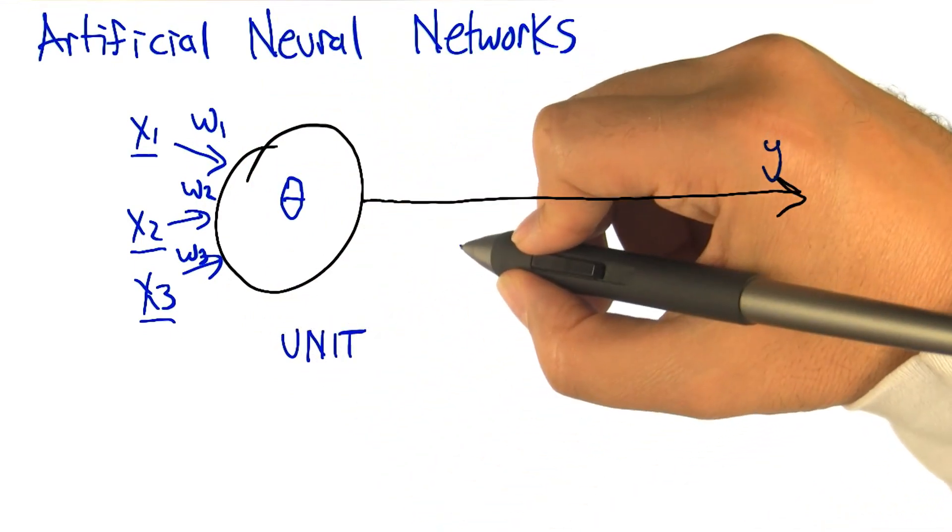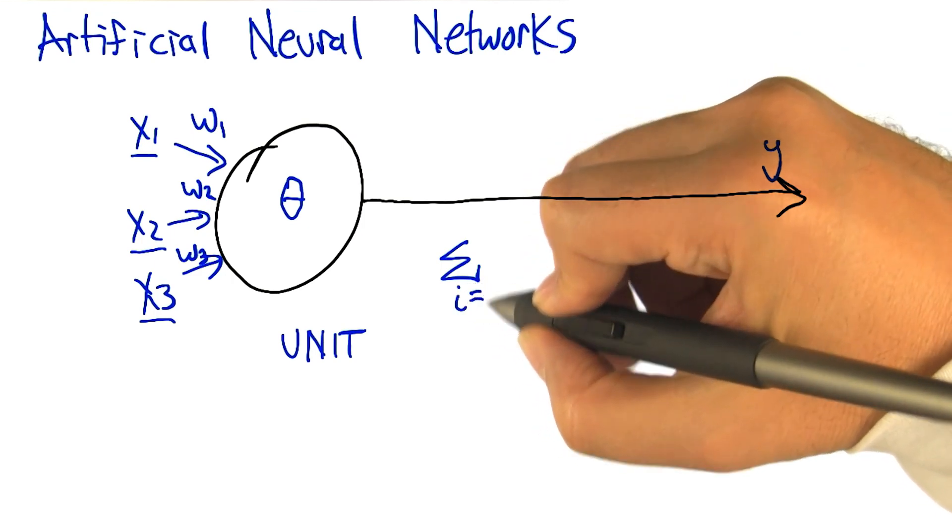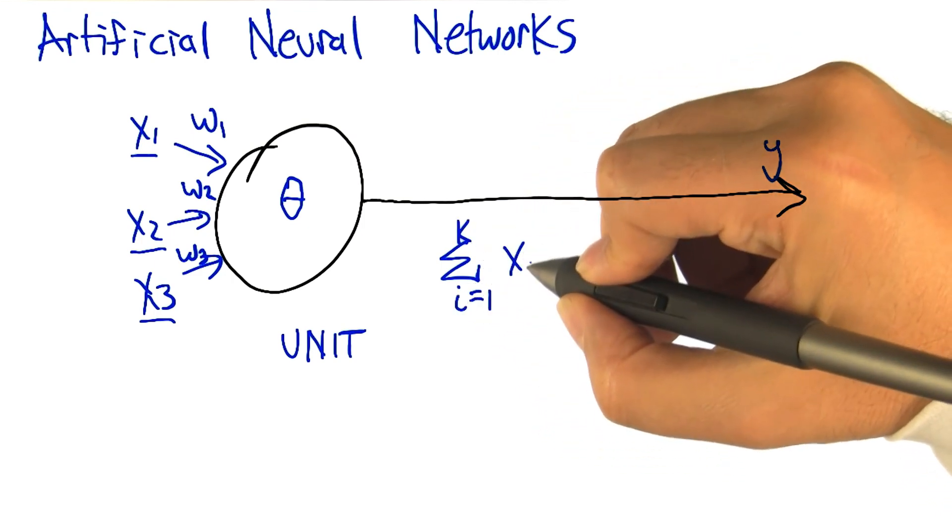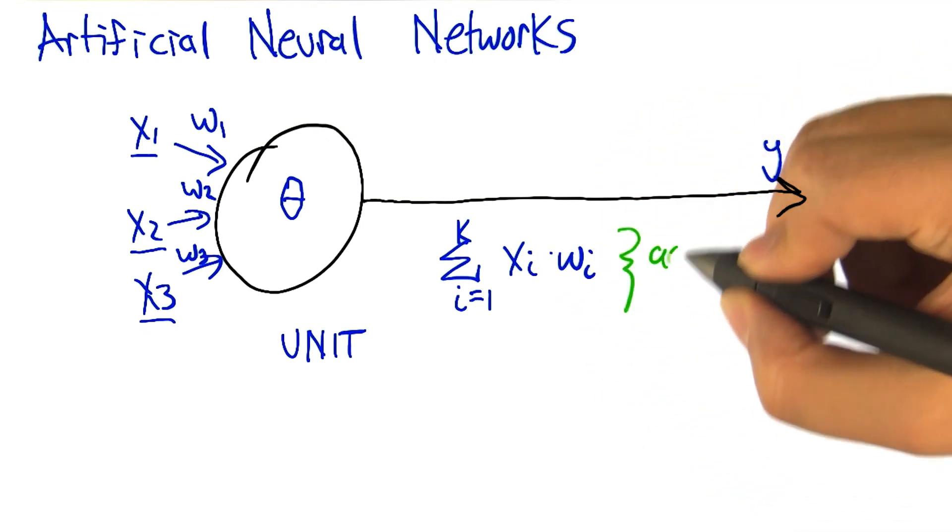Then what we're going to do is we're going to sum them up. So we're going to sum over all the inputs. The strength of the input times the weight. And that's going to be the activation.